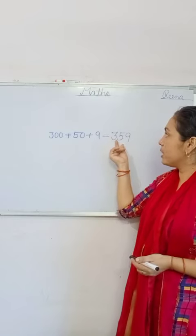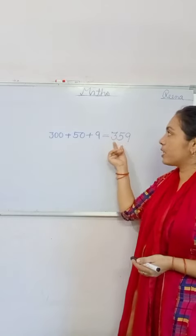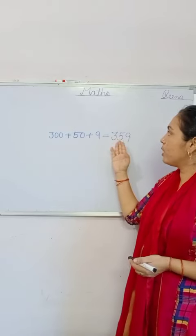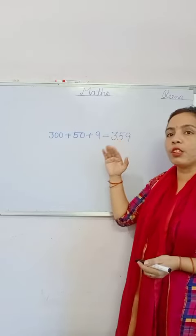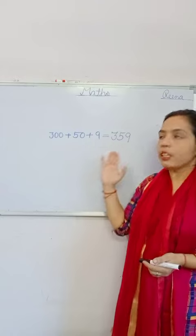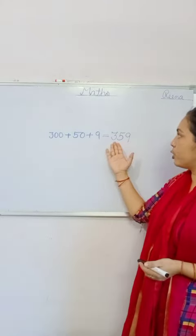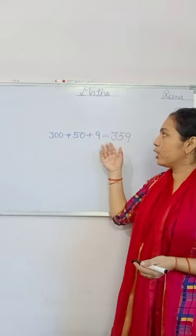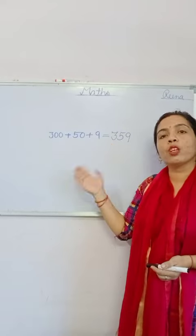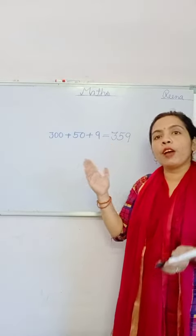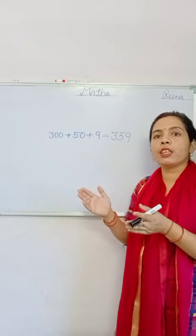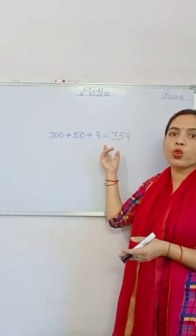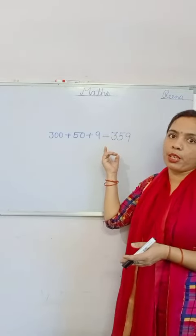These digits stand in different, different places. All digits have different, different values. Yeh sare digits jo hain alag-alag place pe stand hain. Aur in digits ke jo values hongi woh bhi different hain. Toh jo value hogi woh place value ho jayegi. Aur jis place pe yeh stand hain, usse kya bolenge? Place bolenge.